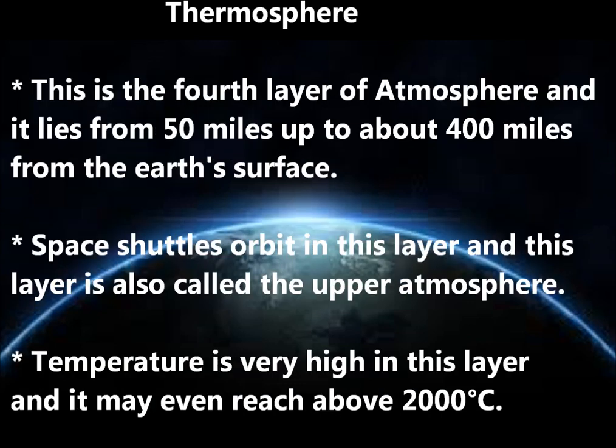The Thermosphere is the fourth layer of the atmosphere, and it lies from 50 miles up to about 400 miles from the Earth's surface. Space shuttles orbit in this layer, and it is also called the upper atmosphere. Temperatures are very high here, and may even reach above 2,000 degrees C.